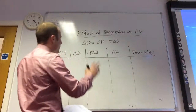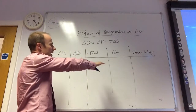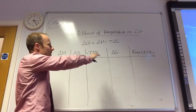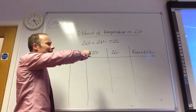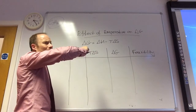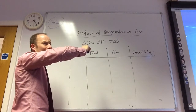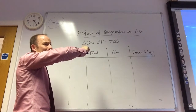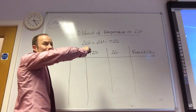We're going to look at the effect on each of these values as we change temperature. The key thing is: if you want to find the temperature that the reaction will just go at, you set delta G equal to zero.